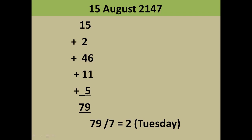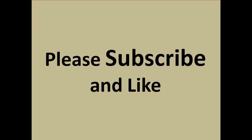This is a simple, universal method — a little practice and you can do it all mentally. One more tip: instead of adding everything first, you can divide each number by 7 and add only the remainders. For example, 15 ÷ 7 = remainder 1, 46 ÷ 7 = remainder 4, 11 ÷ 7 = remainder 4, plus 5 — you'll still get Tuesday. If you like this video, please subscribe and hit the like button. Thanks for watching!